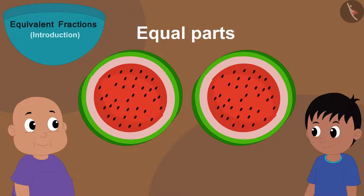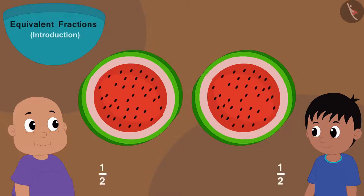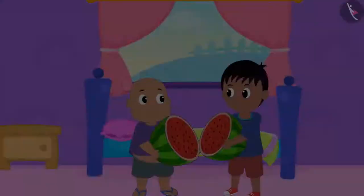There are two equal parts of watermelon here and both Raju and Bablu have taken a part of it. So we can say that both Raju and Bablu got one by two or half of the watermelon.